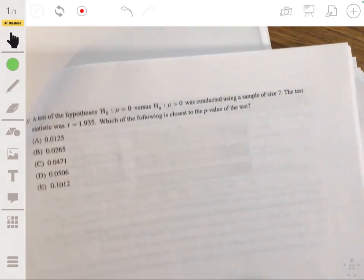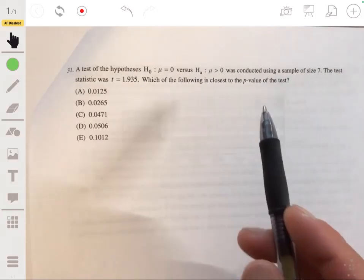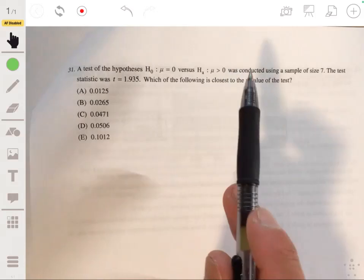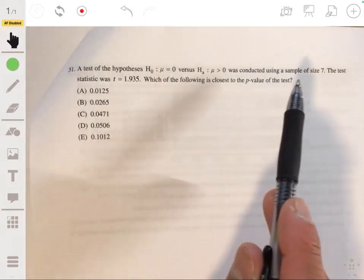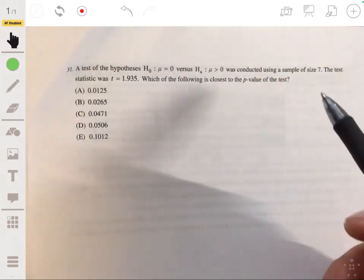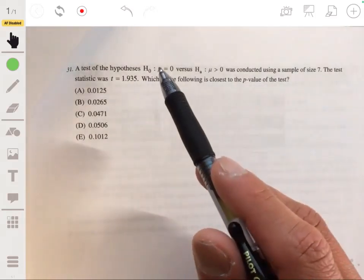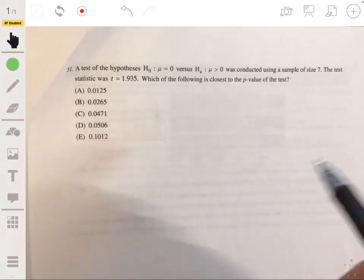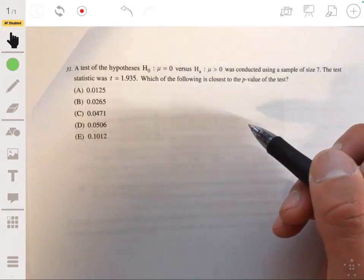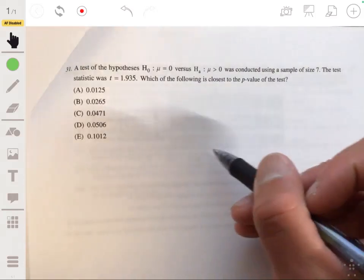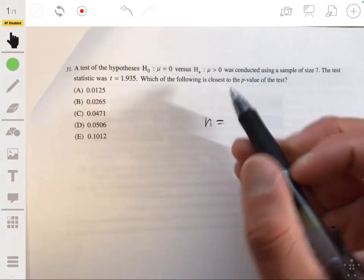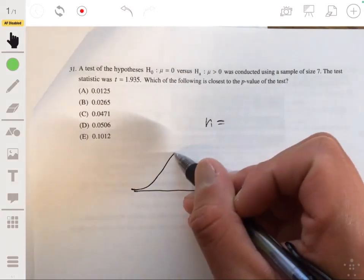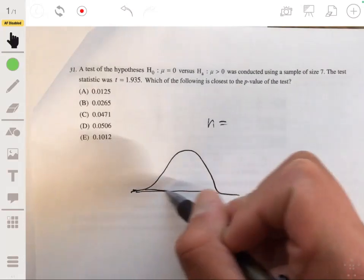All right. 31. A test of the hypothesis, H0 is that mu is 0 versus the alternative that mu is more than 0, was conducted using a sample of size seven. The test statistic T is 1.935. So which of the following is closest to the p-value of the test? Okay. So this is really just making sure that you, the T, remember T, a test statistic T is still the same concept as a Z score. We just have technically a T distribution.